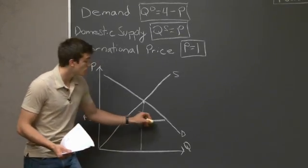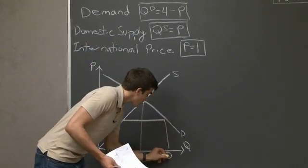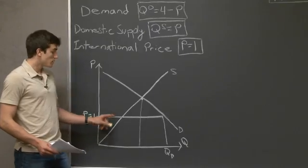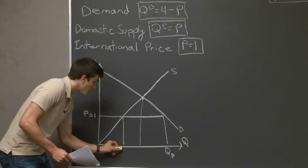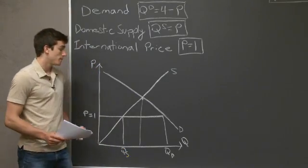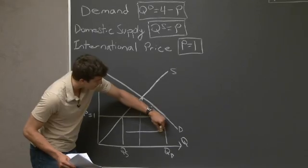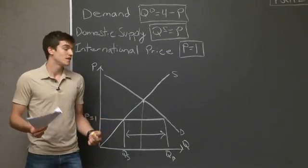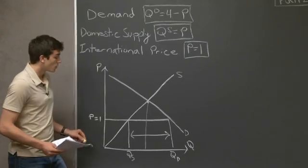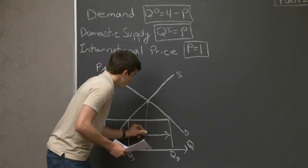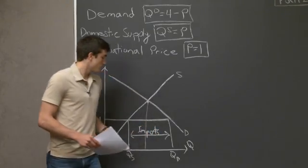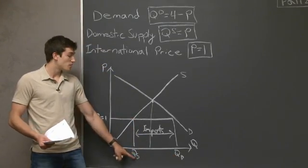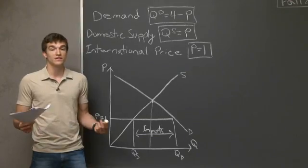Consumers are going to be able to consume more out to a point we'll calculate. Suppliers domestically will only be willing to supply a smaller quantity at that point. That means all of this in the middle — what in earlier problems we would have thought of as excess demand — is no longer excess. These consumers can actually get the product, and the way they're going to get it is through imports. We need to calculate how much people will demand, how much domestic suppliers will produce, and what difference is made up by international importers.